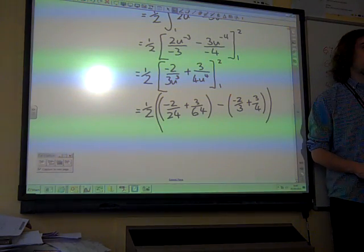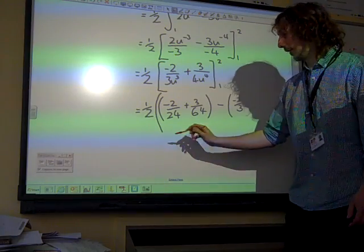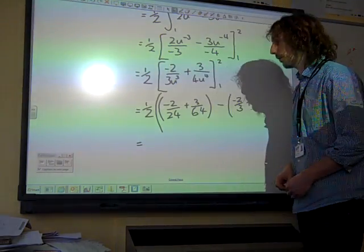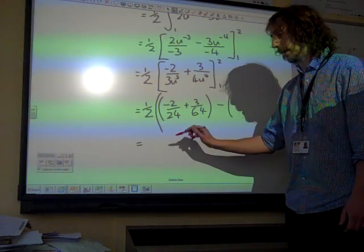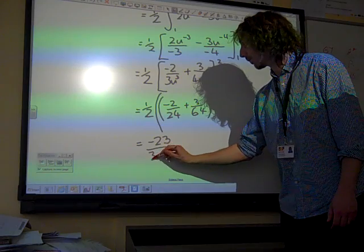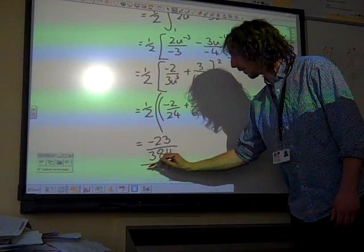At this point, hopefully you can carefully put that into the calculator with the fractions button and all of that. And it will give you a nice answer. This comes out as being minus 23 over 384.